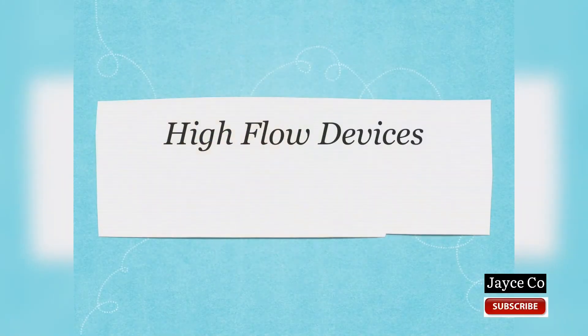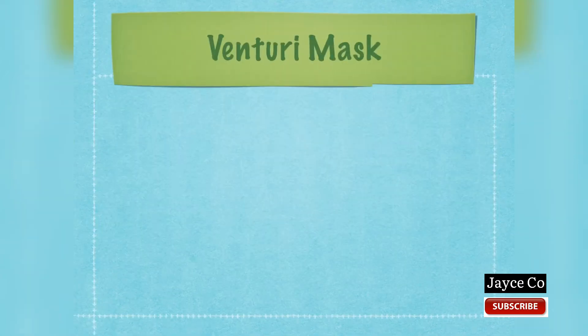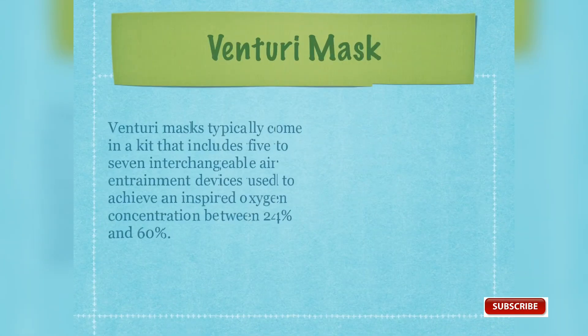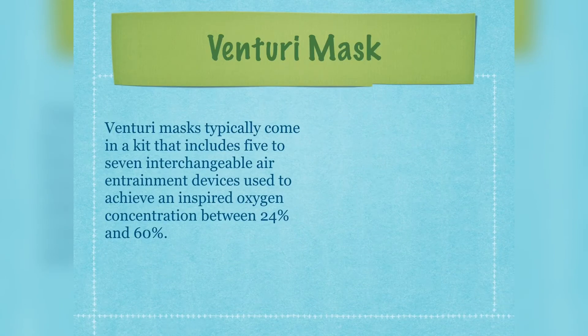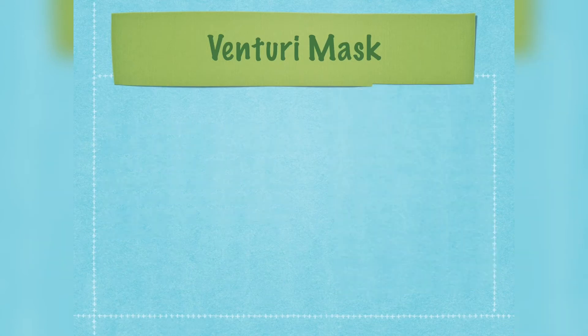High-flow devices deliver a prescribed low or high O2 concentration at rates that exceed patient demand, thereby providing more than enough oxygen for each inspiration. Venturi mask typically comes in a kit that includes 5–7 interchangeable air entrainment devices. It is used to achieve an inspired oxygen concentration between 24–60%.